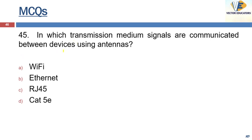In which transmission medium are signals communicated between devices using antennas? The answer is wireless communication — it is Wi-Fi.